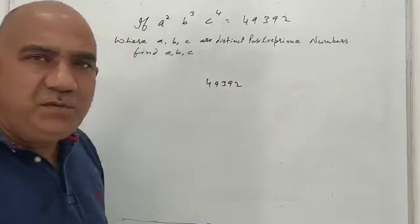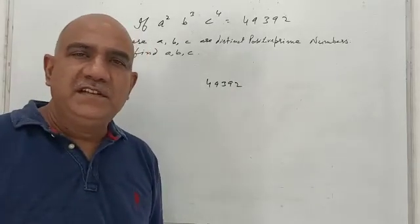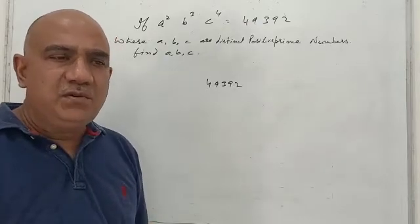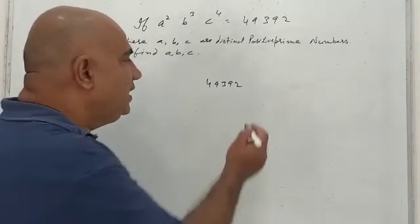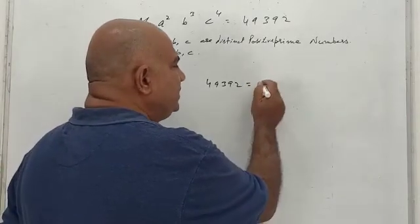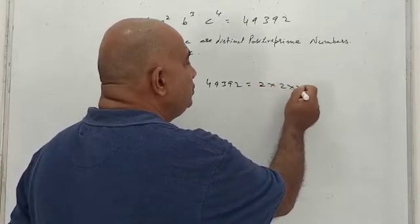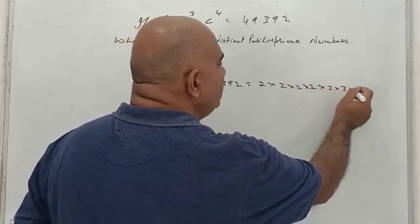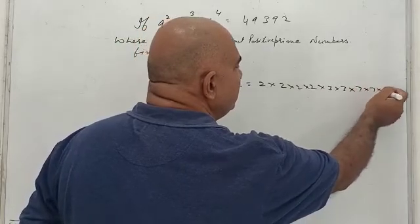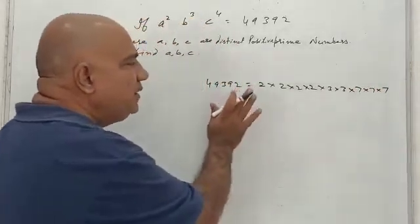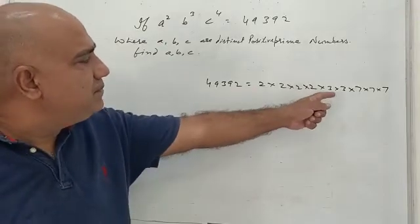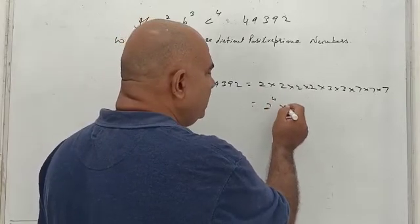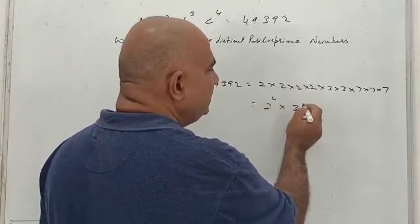For 49392, you must know how to make prime factors — start dividing by 2 and keep going with the next higher number. When you do this, you will get: 2 × 2 × 2 × 2 × 2 × 2 × 3 × 3 × 7 × 7 × 7 as the prime factors.